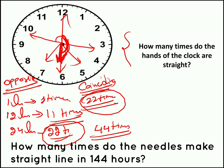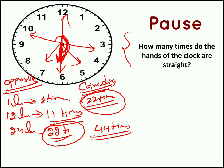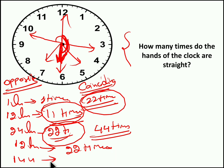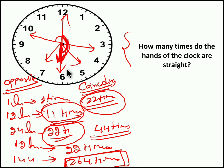Follow-up: how many times do the hands of the clock go straight in 144 hours? In 12 hours the hands are straight 22 times (11 coinciding plus 11 opposite). Cross-multiplying for 144 hours gives 264 times. So 264 times is the answer for 144 hours. And as noted, in a single day (24 hours) both needles are straight 44 times.